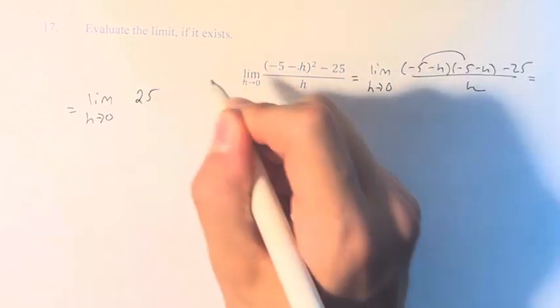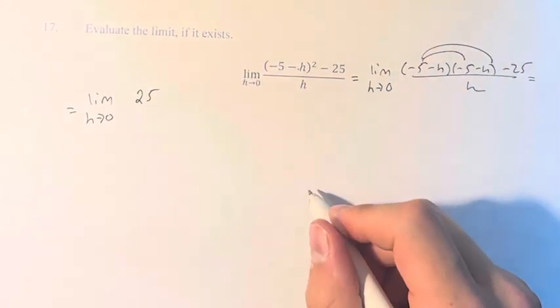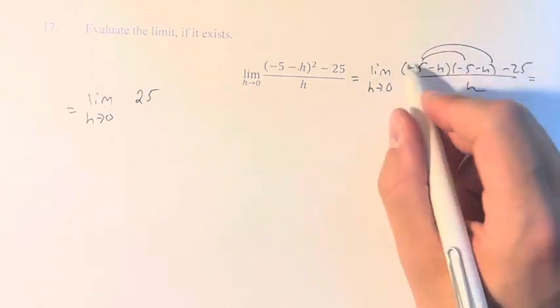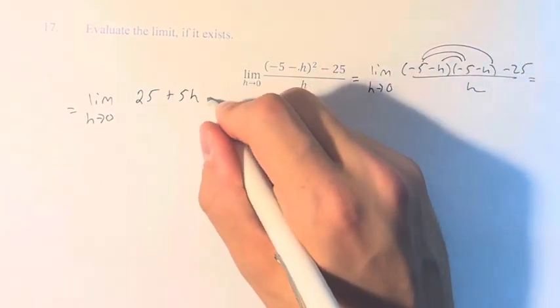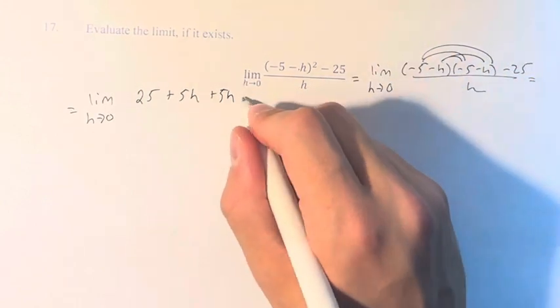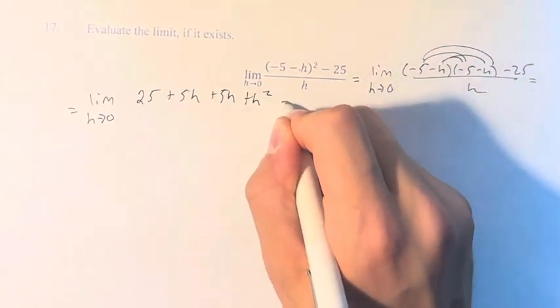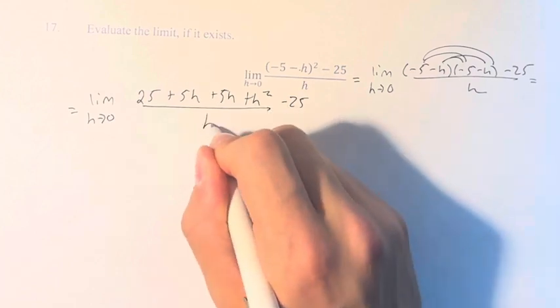So we have (-5) times (-5) is 25. (-5) times (-h) is positive 5h. Another positive 5h, and (-h) times (-h) is positive h². Don't forget the minus 25, and we're dividing by h.